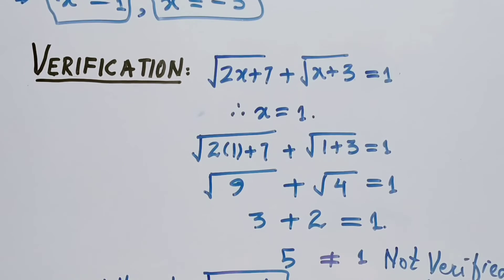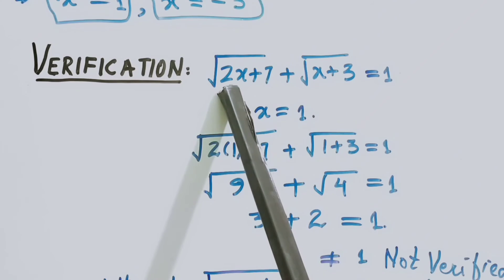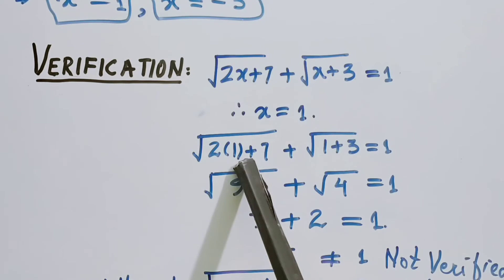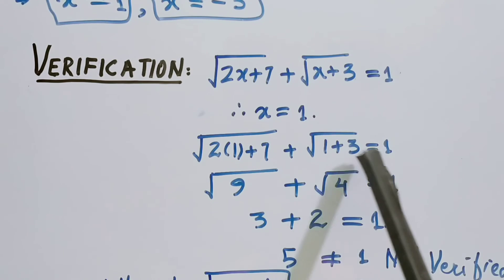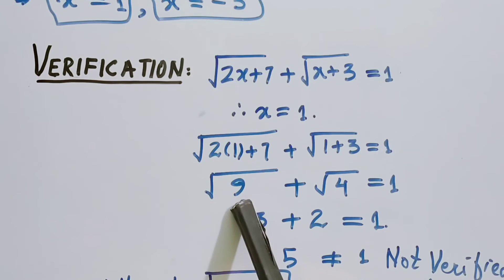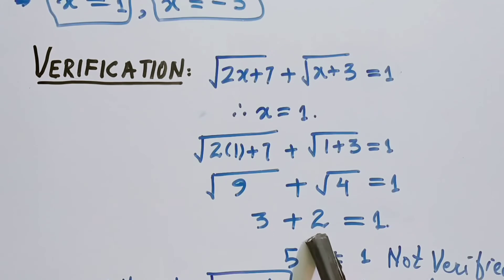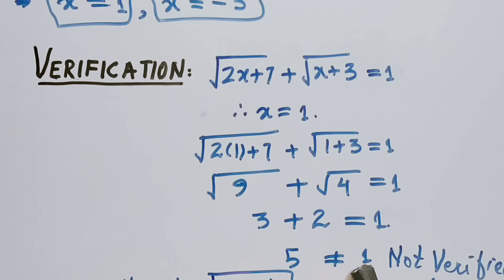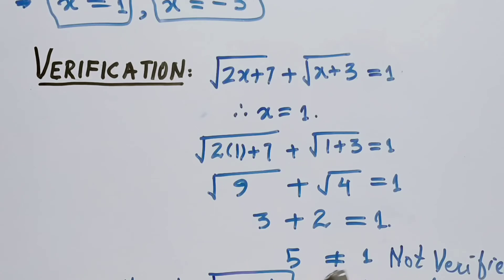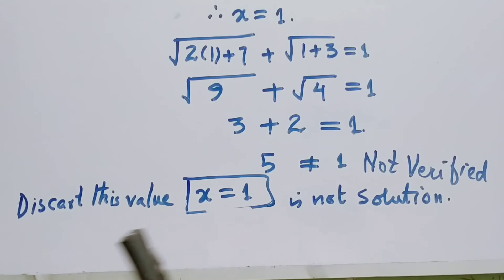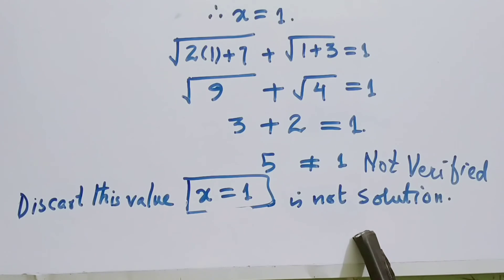For verification, we put x = 1 into the original equation: root of (2×1 + 7) plus root of (1 + 3) = root of 9 plus root of 4 = 3 + 2 = 5. But 5 is not equal to 1, so x = 1 is discarded and is not part of the solution.